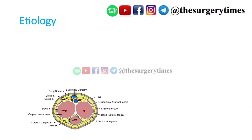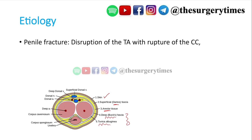To start with etiology — how it happens — you should first know the basic anatomy of the penis from outside to inside: skin, dartos, areolar tissue, deep Buck's fascia, and tunica albuginea. These five structures you should know. The fourth and fifth layers — Buck's fascia and tunica albuginea — are mainly important in penile fracture.